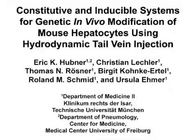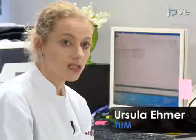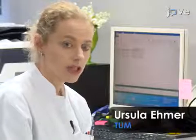The overall goal of this method is the stable transfection of hepatocytes in vivo with vector constructs for inducible gene or shRNA expression. This method can help to answer key questions in the field of liver research. For example, it can be applied to investigate mechanisms in liver cancer and regeneration.